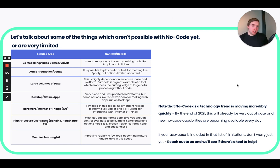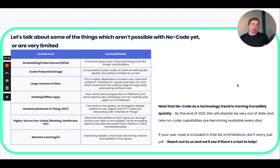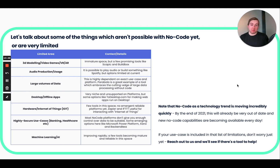Highly secure use cases — think banking and healthcare, where if any data got out you'd probably get sued and be all over the news. In general, no-code apps are not great at this so far, because most are hosted in the cloud and you're not fully controlling the code or the data, which makes regulators very twitchy. There are some platforms like AppGyver and BackEndless that allow you to host your no-code software on your own servers and infrastructure, giving you a lot more control. If this starts to sound too technical, don't worry — we're going to stay pretty far away from these absolute limitations.